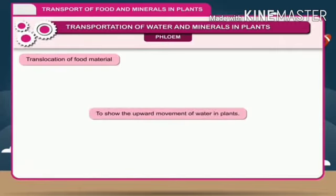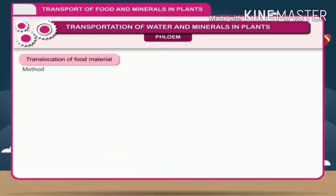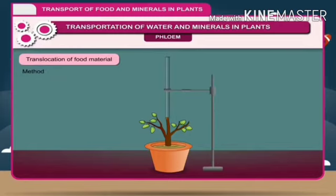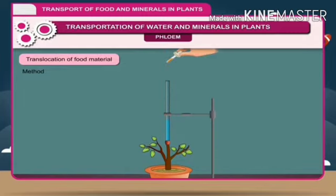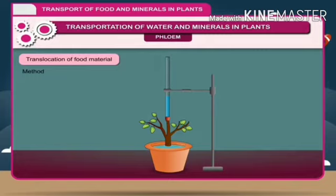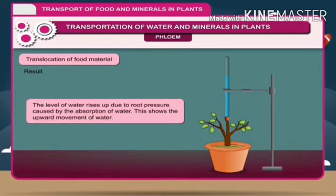Activity: To show the upward movement of water in plants. Method: Take a fresh potted plant of tomato. Cut its shoot near the soil. Fix a glass tube and tighten the connection with a rubber band. Add water in the tube so the cut surface does not dry up. Add two or three drops of oil to prevent evaporation. Add water in the pot and observe the level of water rising up. This is due to root pressure caused by absorption of water. Result: The level of water rises up due to root pressure, showing the upward movement of water.